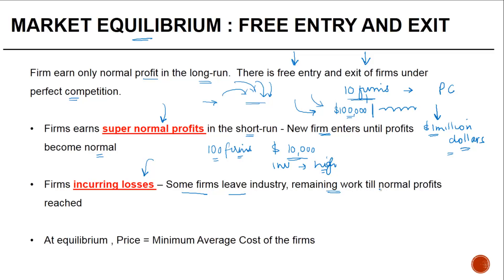Some firms will decide to leave the industry. The remaining firms will continue until normal profits are reached. So if instead of one hundred firms you ultimately come down to ten, each one earns a bit more. This continues until profits are normal. Equilibrium is achieved when the price is equal to the marginal average cost of the firms.